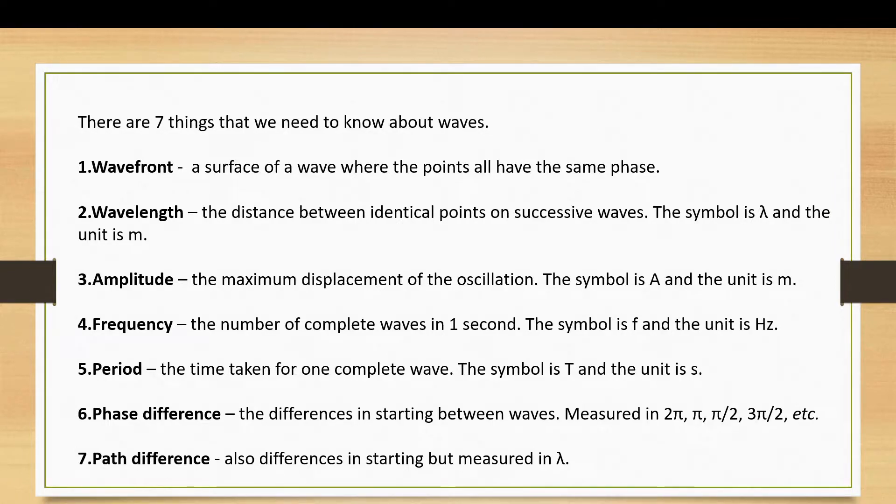I've put this in with path difference because often it's easier to think about differences in waves in terms of wavelengths. So if one wave starts half a wavelength behind the other, then it has a path difference of half lambda. We translate that into degrees. So one whole wave is the equivalent of 360 degrees. And radians are expressed in multiples of pi. So a whole circle, 360 degrees, is 2 pi radians, and that's one whole wavelength. Half a circle, half a wavelength, 180 degrees, pi radians, and so on.